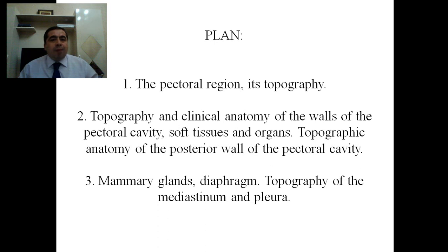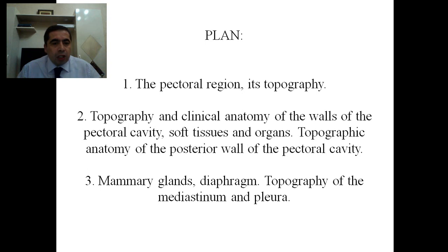I have prepared a special plan for a more simple explanation of today's lecture topic. First, I'll explain the pectoral region and its topography. Then I'll talk about the topography and clinical anatomy of the walls of the pectoral cavity, soft tissues and organs, and topographic anatomy of the posterior wall. In the third part, I'll explain the mammary glands, the diaphragm, and topography of the mediastinum and the pleura.